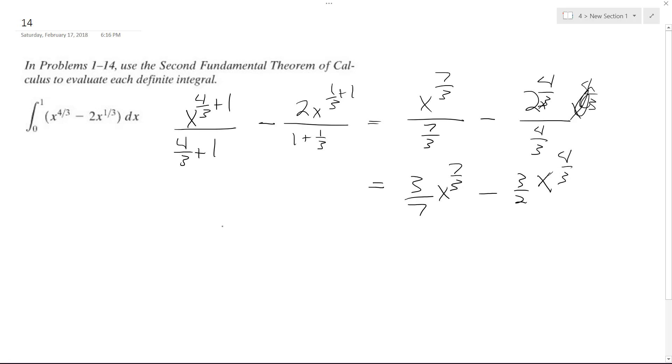so evaluating this from zero to one, we get, starting off with one, so I get three sevenths. It's nice we got numbers that turn out, or that are easy to work with because if we had anything else other than one, it would be kind of funky. All right, minus three halves, one raised to the four thirds.